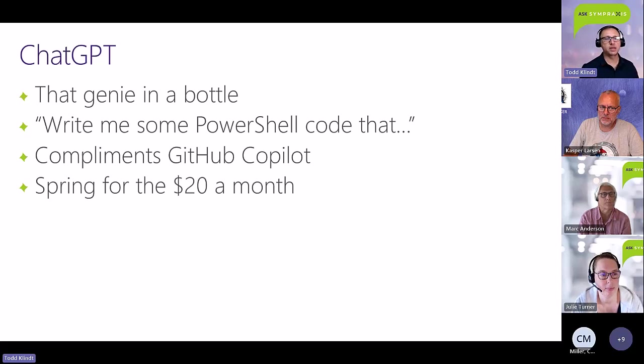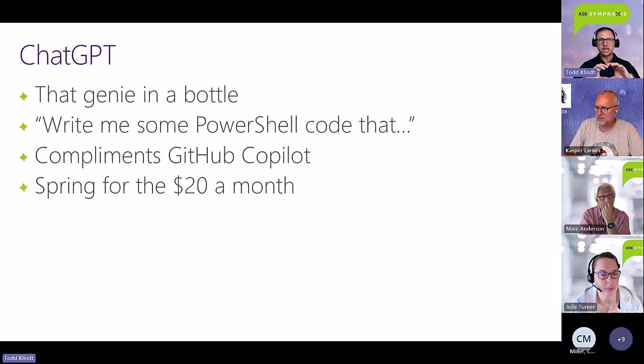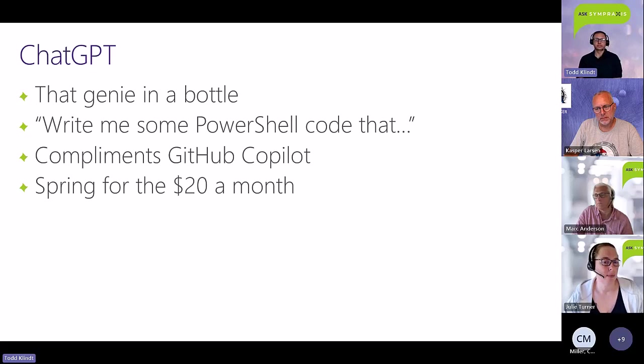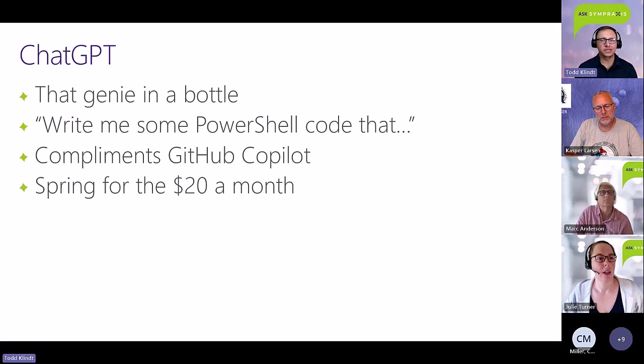Now let's talk about ChatGPT — the genie in a bottle. It does code but it does everything. The prompt is not just the place you type; it's the thing you tell the AI to do — you're prompting it to work. I just say 'write me some PowerShell that does X' and it does. I find it a good complement to GitHub Copilot and generally use it the most since I started with it. It's also around $20 a month.